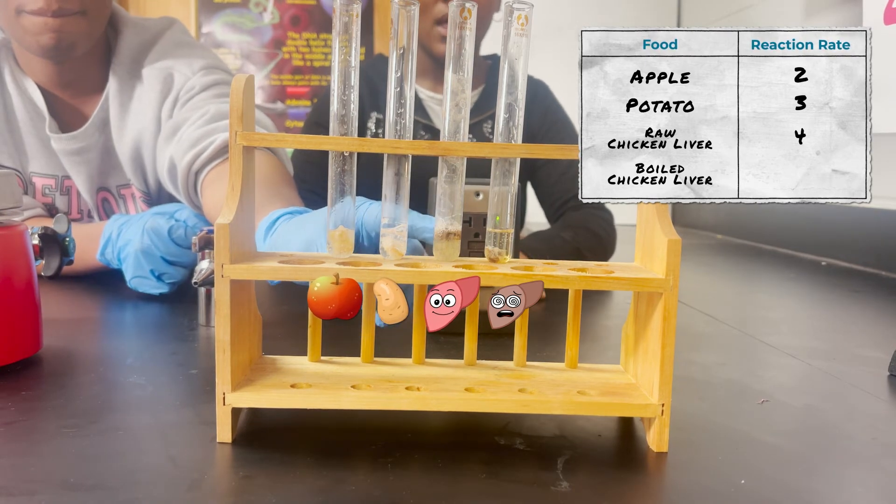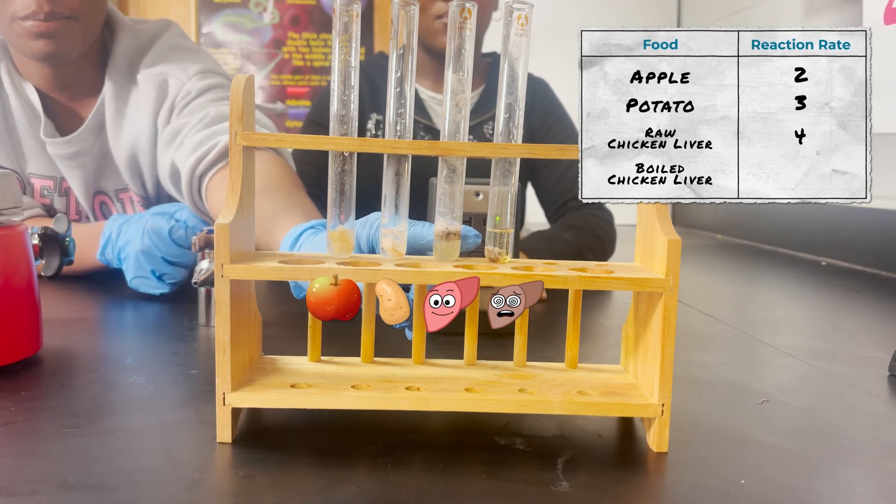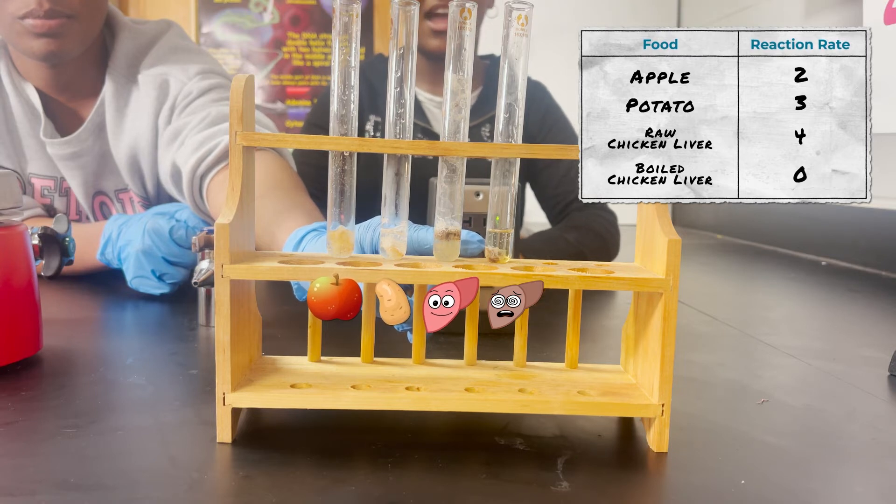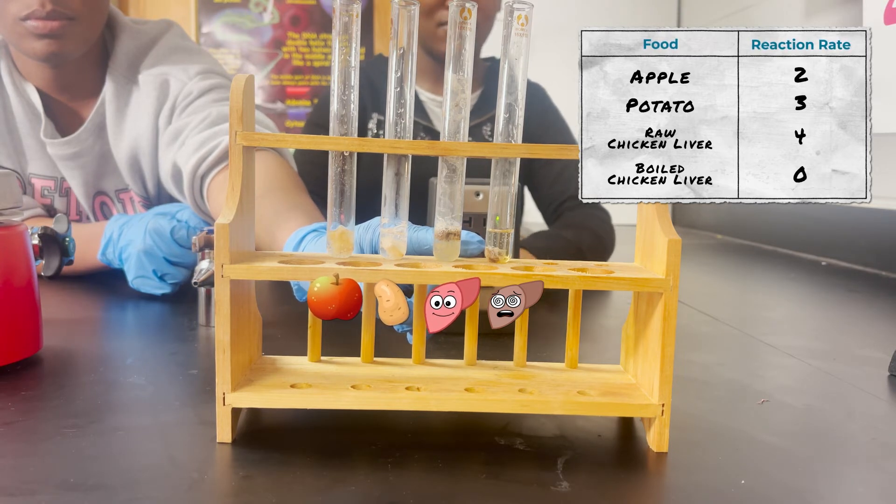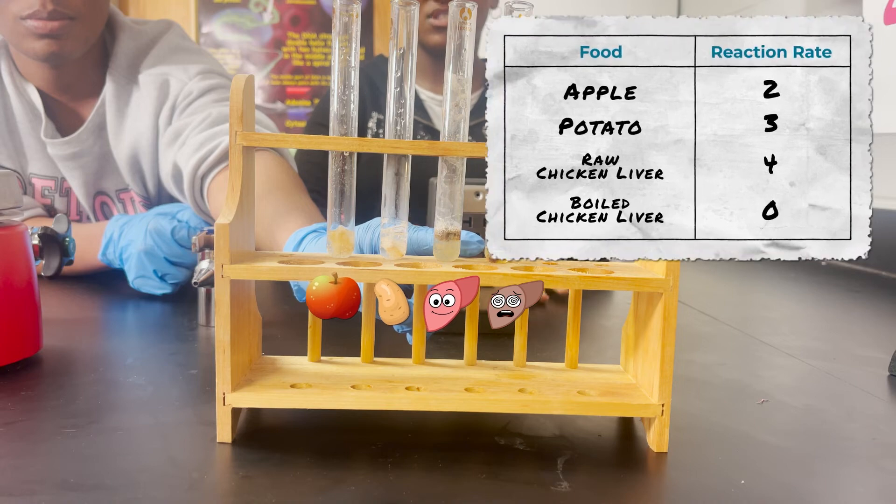The boiled liver's reaction rate was a 0 because it has no bubbles, no foam, and no reaction. When you boil a protein at a high temperature, it denatures and breaks down the enzyme.